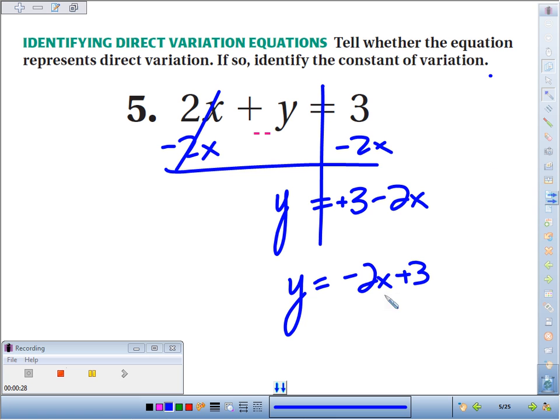Now if we look at this equation, to be direct variation, it has to be y equals some number, the slope times x. There can't be any extra stuff.